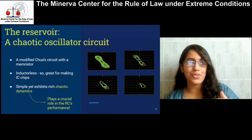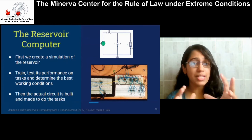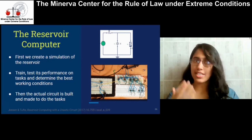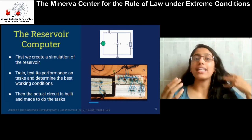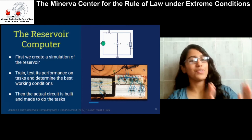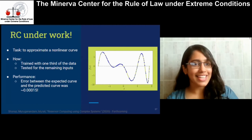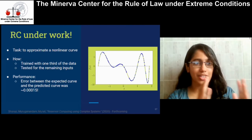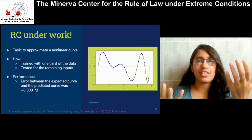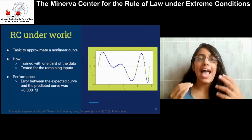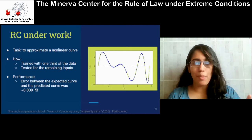It has both periodic and chaotic oscillations, which make it so useful as a reservoir computer. We made a circuit into a reservoir computer with these simple steps: first, we build the reservoir as a simulation and neural network algorithm. We train it for certain tasks and test how it performs. Then, based on those observations, we fix the circuit parameters, build an actual physical circuit, and make it do the same task. The task we made this reservoir do is to predict a nonlinear curve. I fed the reservoir with a third of the data — sets of inputs and outputs — training it to recognize what output it should get for a given input.